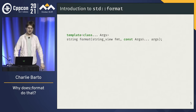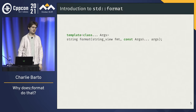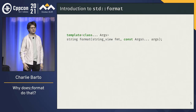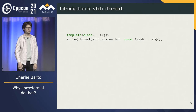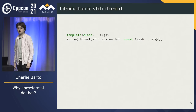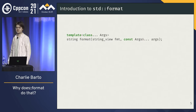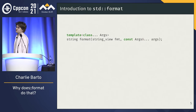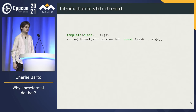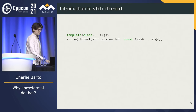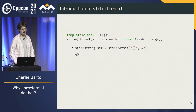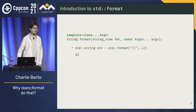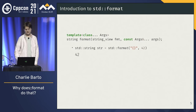std::format was added in C++20. It's a new text formatting facility based on the relatively popular libfmt library, but some features are removed and some things are changed slightly to make it fit into the standard. That library is inspired by Python's str.format method, among others, so if you've used that, it'll be similar.